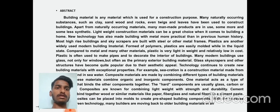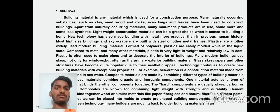Abstract: Building materials are any material which is used for a construction purpose. Many naturally occurring substances such as clay, sand, wood, and rock — even twigs and leaves — have been used to construct buildings. Apart from naturally occurring materials, many man-made products are used, some more and some less synthetic. Lightweight construction material can be a great advantage in home construction, and technology has made building with metal more practical than in previous human history.